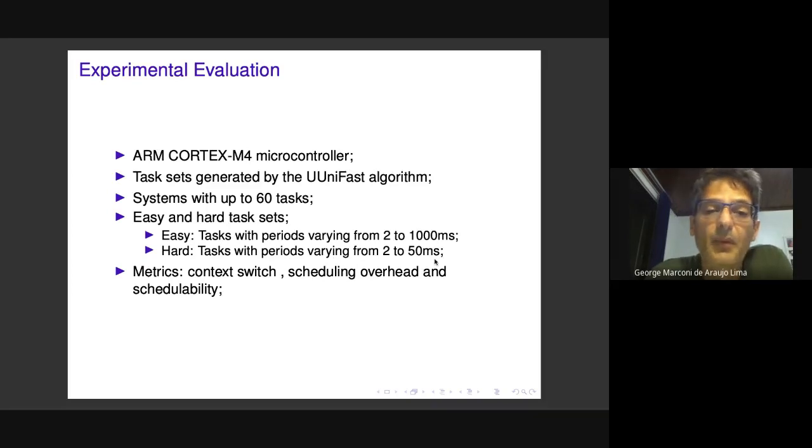There are two types: easy task sets, where task periods vary over a large time window, and hard task sets, where tasks have short periods, releasing tasks in a shorter time window and incurring more overhead from preemptions and context switches.